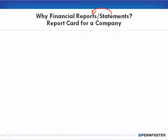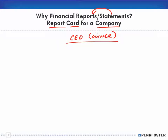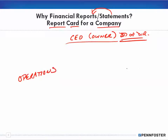So why financial statements? Because it's a report card for a company. Think about it like this: you have the CEO, or if it's not a public company the owner, or if it's a big company a board of directors. When you look at a company, you can think about it in three different terms as an overall view: you have operations, you have sales and marketing, and you have accounting and finance.